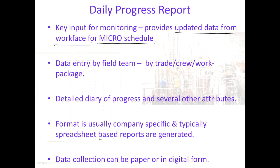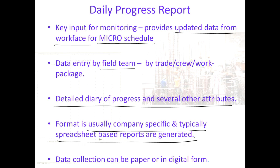This micro schedule — you can see in the background I have some forms — it typically used to be done on a paper form by the foreman or supervisor. They would fill out what is essentially a diary of the project: what happened, how much work was done, how many people were deployed, what equipment was deployed. All this is entered by the field team as a detailed diary of progress. If you go on to the web, you will find several formats available for the daily progress report, though it is usually company specific and typically based on spreadsheets.